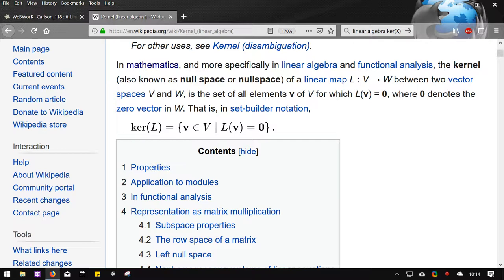of a linear map between two vector spaces is the set of all elements of V. We look at this. V is in the domain, so it's going from V to W. So it's every element in the domain that has the property that L(V) equals zero. We're going to use this definition right here.